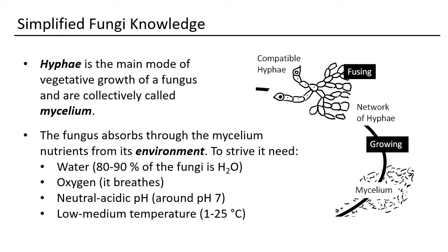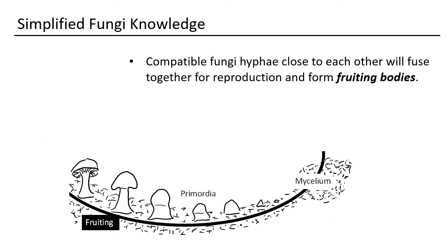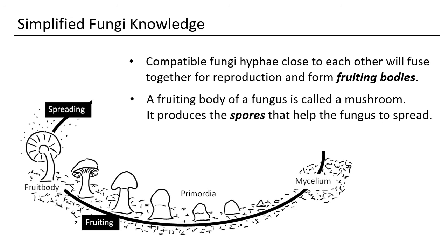That is not always ideal, but you can always take them out for a while to give them a temperature shock. This may be required to induce pinning. Pinning is the point when there is the formation of primordia — you will notice some pins that then continue to grow into what most people call a mushroom. It actually is just the fruiting body.